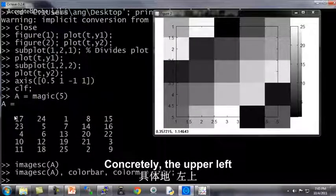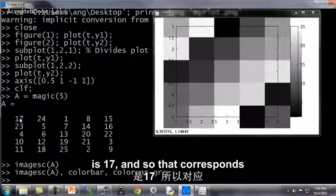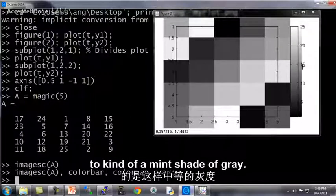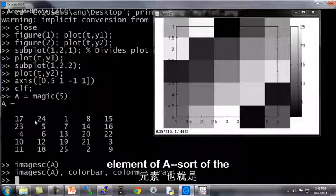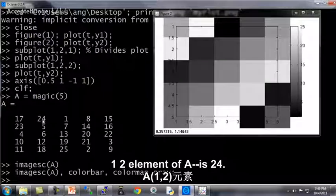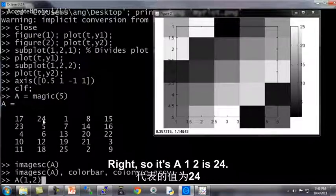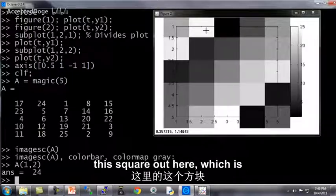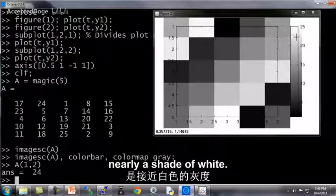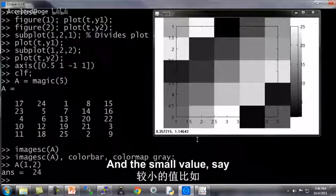Concretely, the upper left element of the A matrix is 17. And so that corresponds to kind of a mid shade of gray. Whereas in contrast, the second element of A, so the 1, 2 element of A is 24. So it's A, 1, 2 is 24. So that corresponds to this square up here, which is nearly a shade of white.